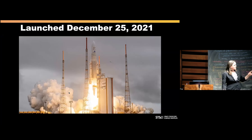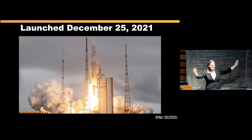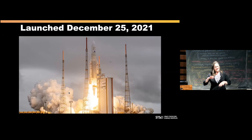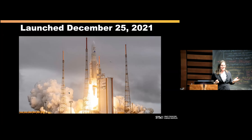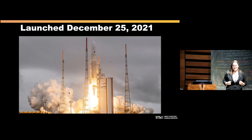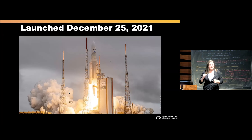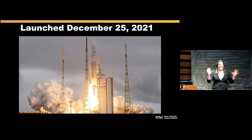The launch was December 25th, 2021 — Christmas morning — the best Christmas present ever, in the middle of a pandemic. My kids were actually kind of happy because it meant I didn't have to go to work on Christmas morning — I got to watch Santa and open presents from home. Did anybody watch the launch? It was a really beautiful launch — the European Space Agency put it on an Ariane 5 rocket and sent it into space with such precision that we probably have enough fuel to keep James Webb orbiting out where it is for up to 20 years.